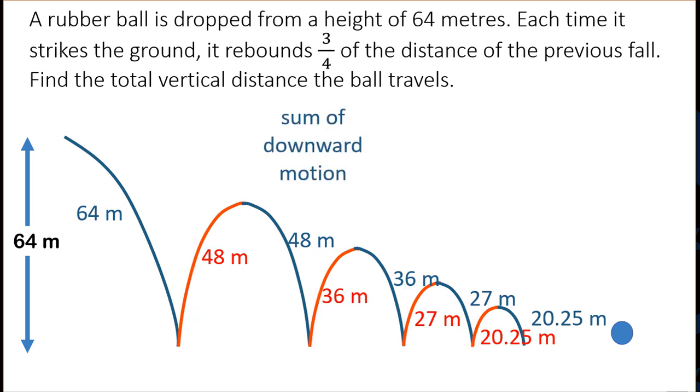Now I'm going to get the sum of the downward motion. R being three-quarters is less than 1 but bigger than minus 1. That means the absolute value of R is less than 1, so therefore I can use this formula.